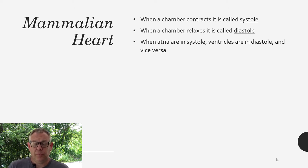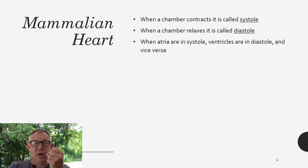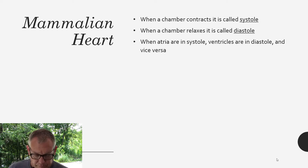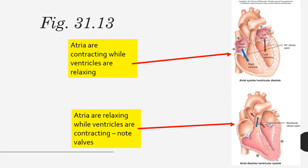When any chamber contracts it's called systole, and when any chamber relaxes it's called diastole. The atria and ventricles are synchronized but opposite to each other — when the atria are in systole the ventricles are in diastole, and vice versa. You can see in this figure from your book that the atria are in systole — contracting — and the ventricles are relaxed. Pressure is high in the atria and low in the ventricles, forcing blood down into the ventricles. Then when the ventricles contract, the atria are relaxed.